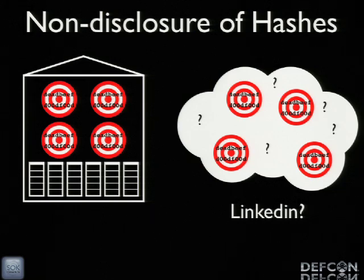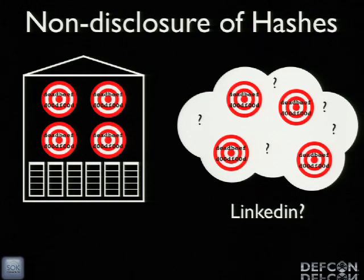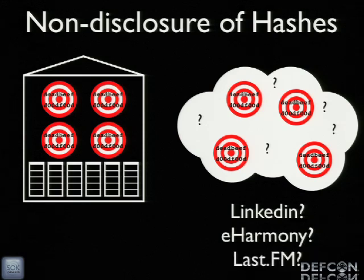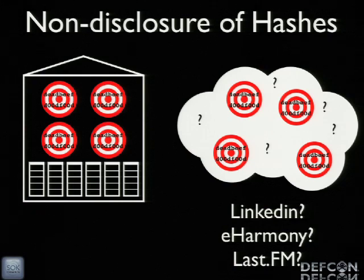So somebody had successfully breached LinkedIn, gotten away with it, and then six months later when somebody went 'I need some help cracking these hashes,' we discovered that LinkedIn had been breached. That is a good argument for non-disclosure of hashes if you're not necessarily supposed to have them. The same is true of eHarmony and Last.fm. Most of the big password breaches have not been discovered by companies saying they lost their hashes - most of them have been discovered by the hashes showing up somewhere else, and users doing exactly what we told them, which is using unique per-site passwords.